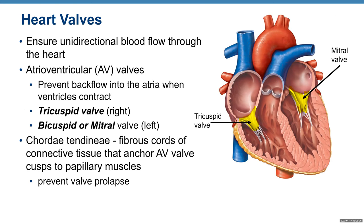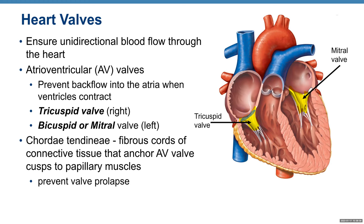Heart valves ensure unidirectional blood flow through the heart. We have two AV valves — meaning atrioventricular — located between the atria and ventricles, shown here in yellow. They prevent backflow into the atria when ventricles contract. When ventricles pump blood, the valve closes to prevent blood from flowing back to the atria.